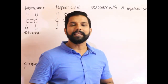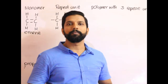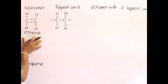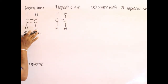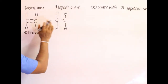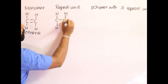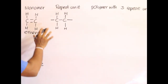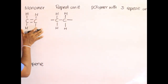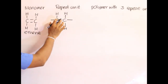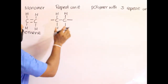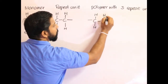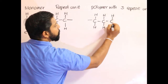Here is an easy way to draw the repeat unit and the polymer structure. Starting with the ethene molecule, to draw the repeating unit just draw the molecule again without the double bond, and put continuous bonds at the two carbon atoms instead. Draw the molecule again without the double bond and put the two dashes. You can then combine three of these repeat units to get the polymer molecule.